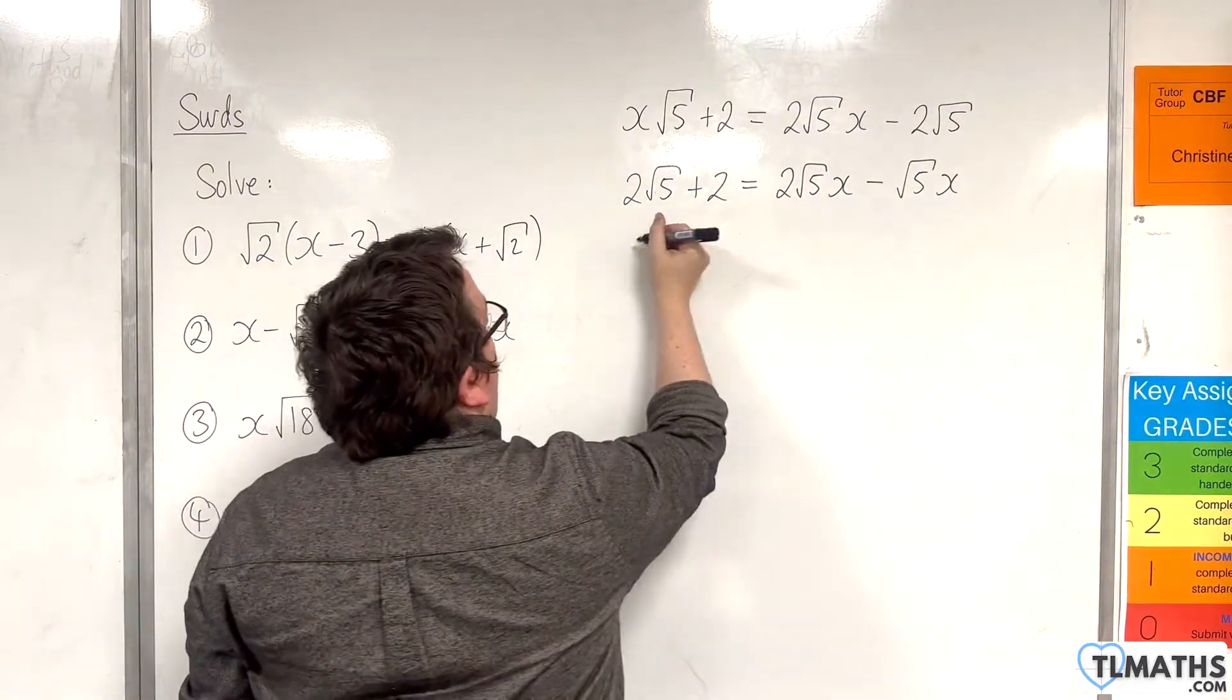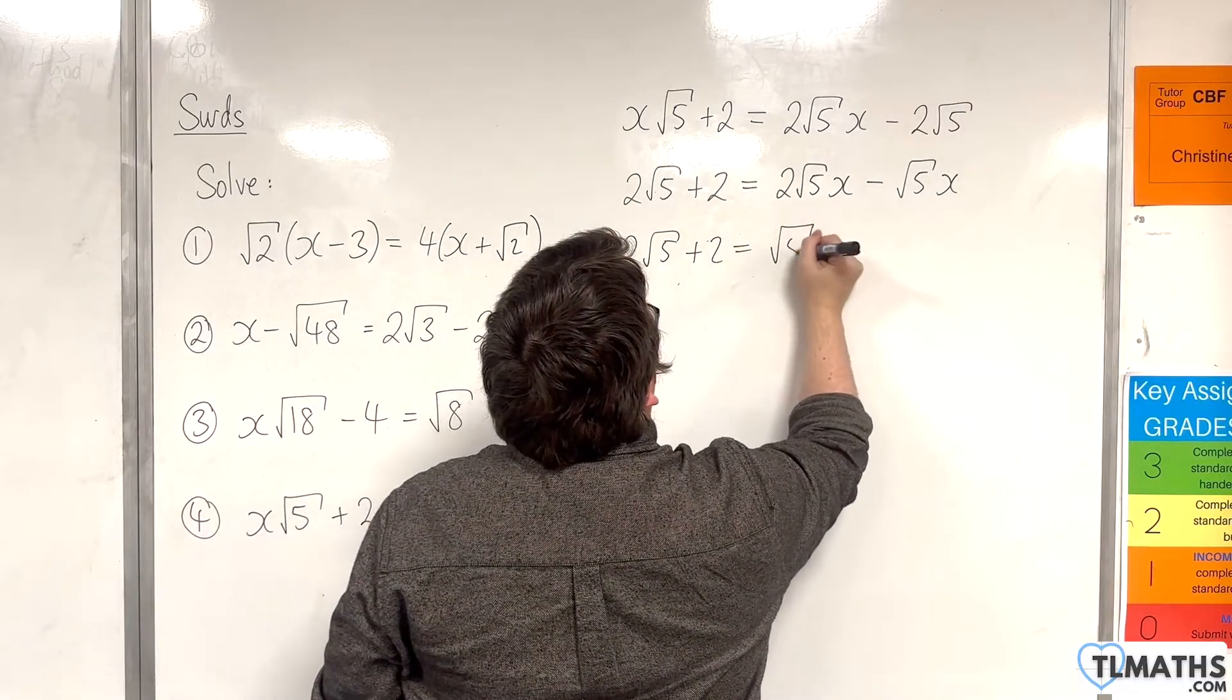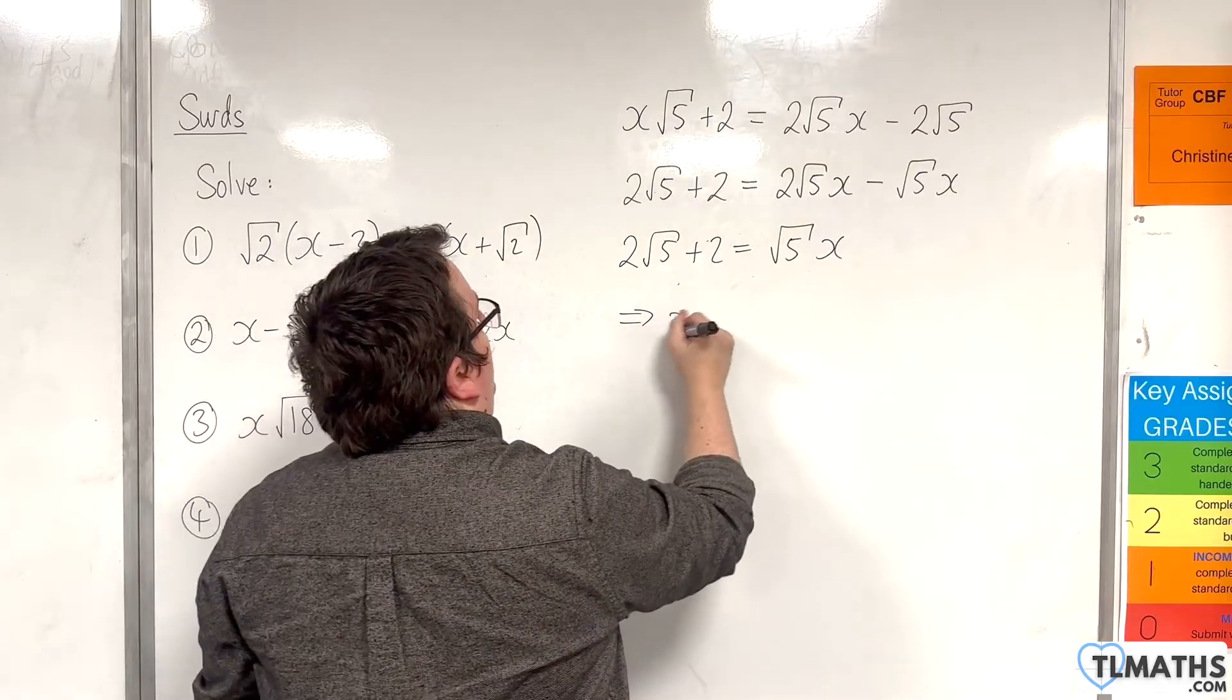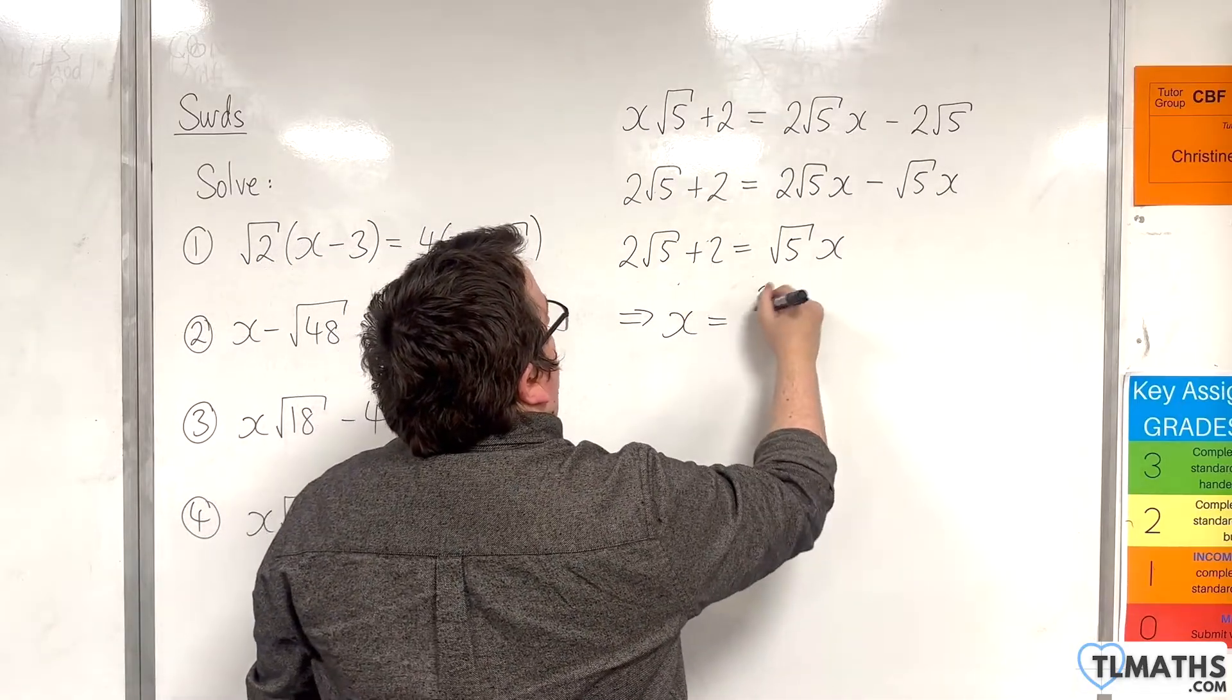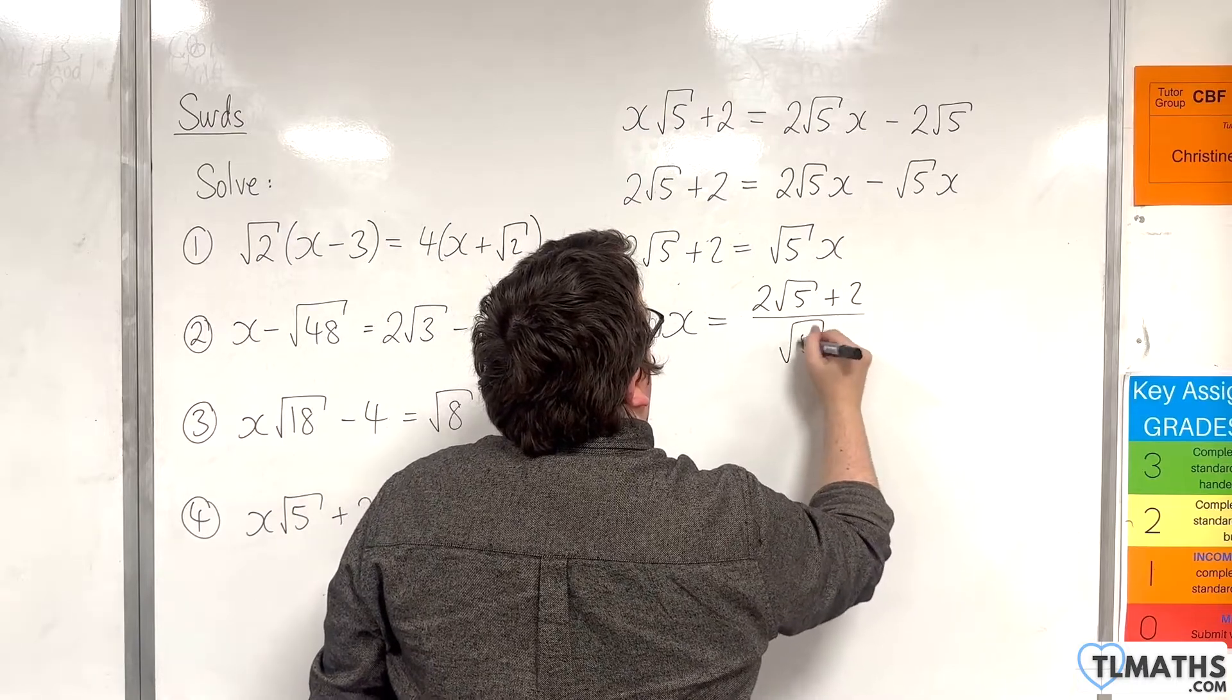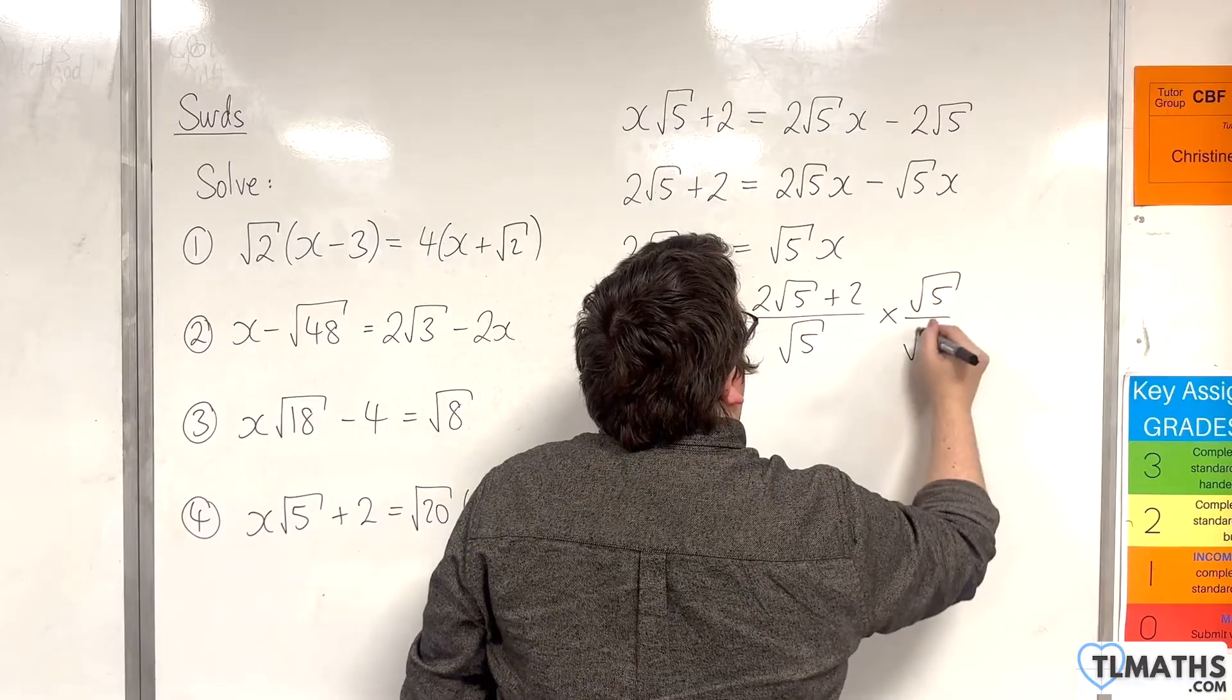So, we've got 2 root 5x take away root 5x. So it's just root 5x on the right-hand side. And then I can divide through by root 5. So x is 2 root 5 plus 2 over root 5. And then rationalizing the denominator, multiplying top and bottom by root 5.